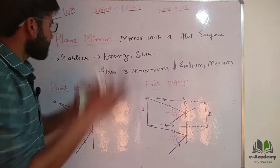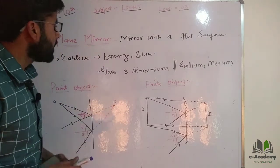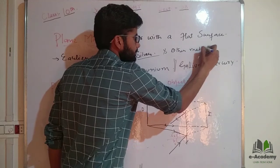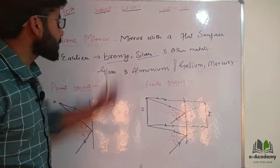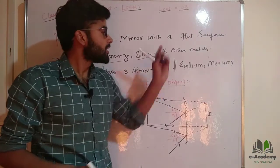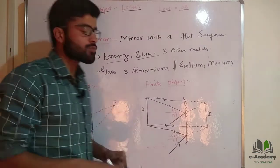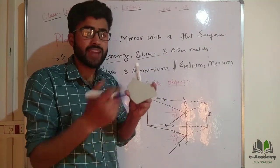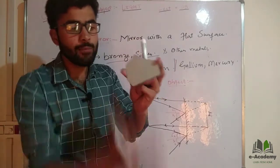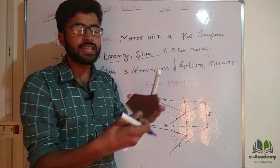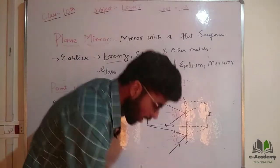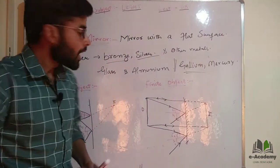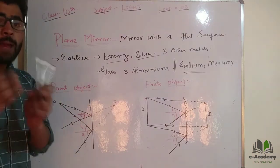In the earlier days, the plane mirror was made of bronze, silver, or other metals. Nowadays we see mirror glass, and on the back side we use aluminium — aluminium polish — and the mirror is formed. We can also use gallium or mercury in the manufacturing of this plane mirror.